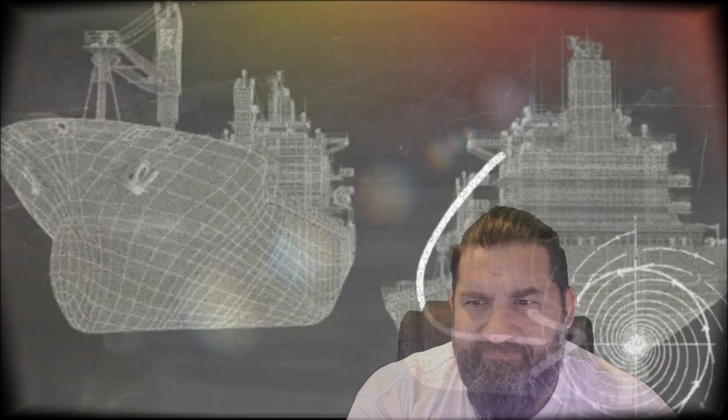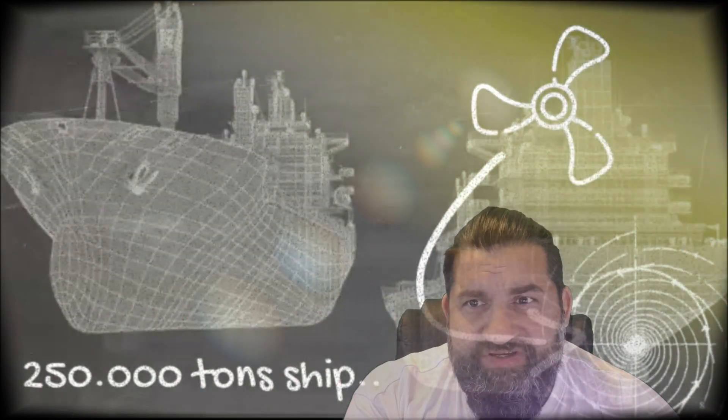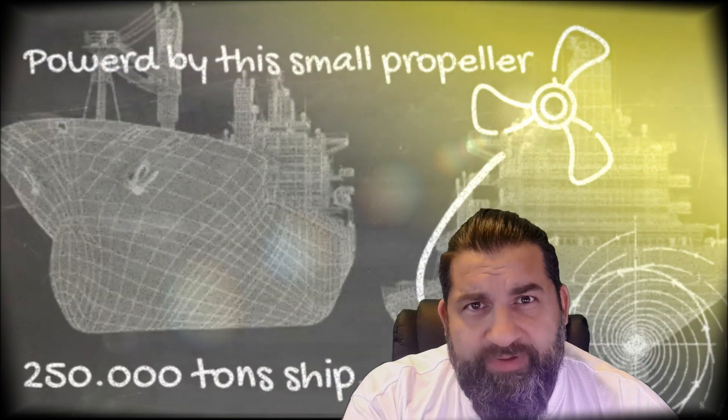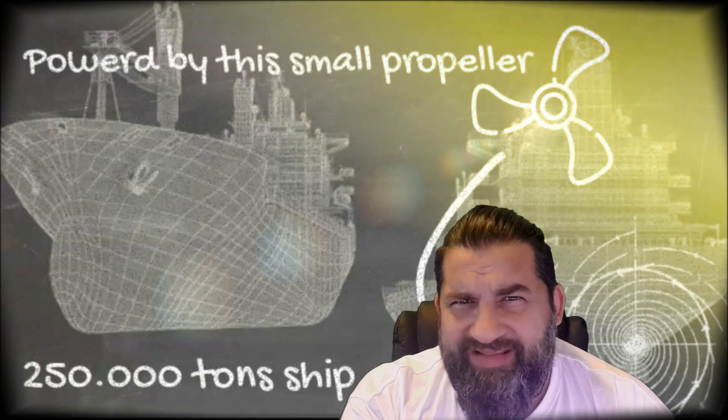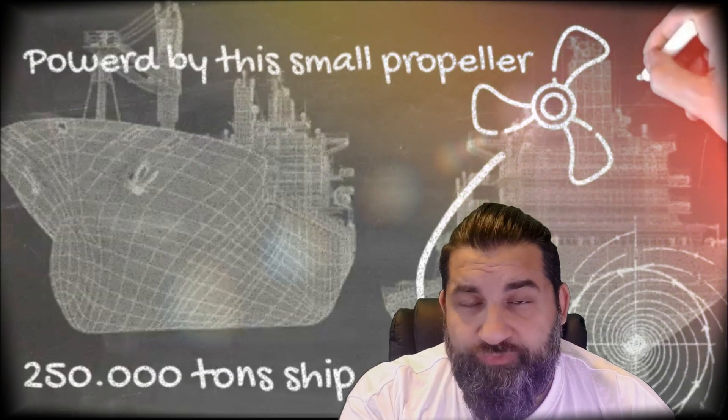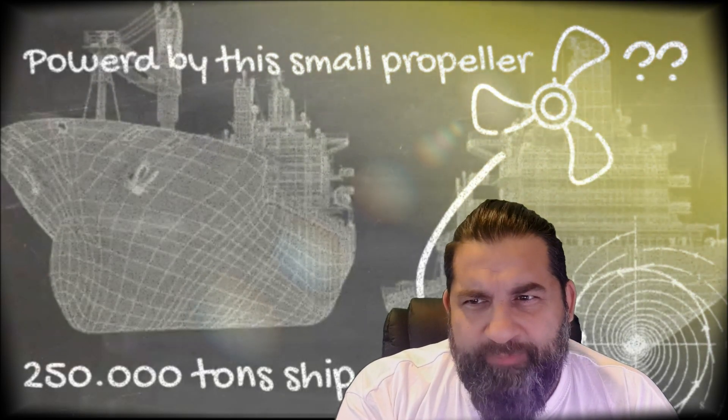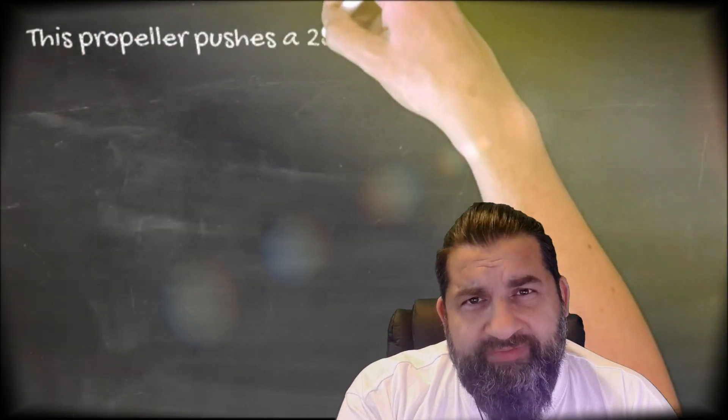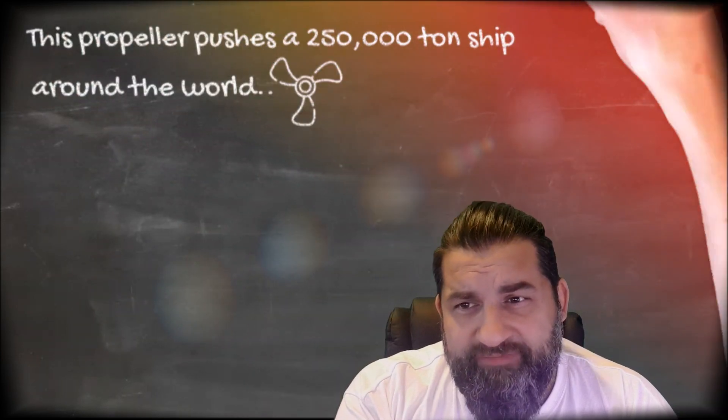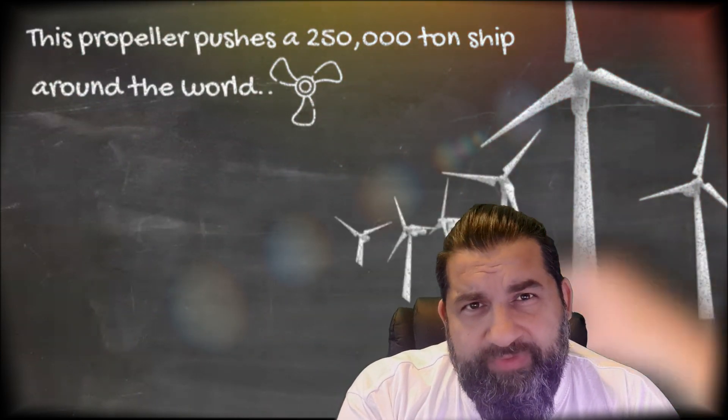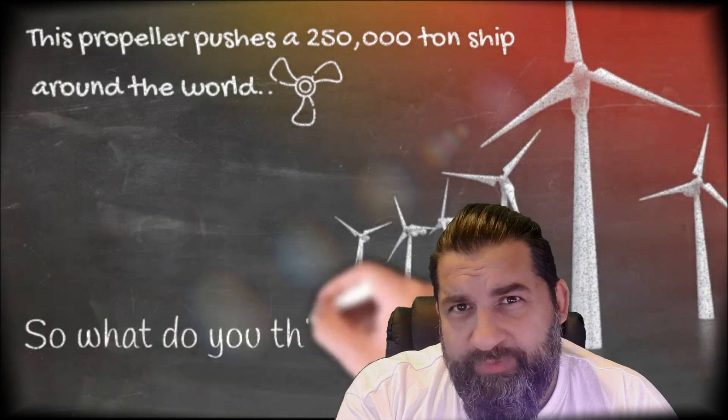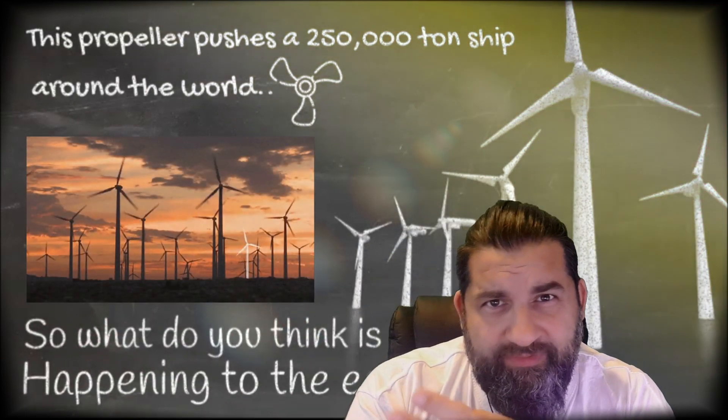Now see this little propeller on a ship. It makes a 250,000 ton ship move from one end of the world to another with no problem, with just a little bit of propeller compared to the size of the ship. This little propeller pushes a 250,000 ton ship around the world. So what do you think this will do to the world? Look, you can see it.